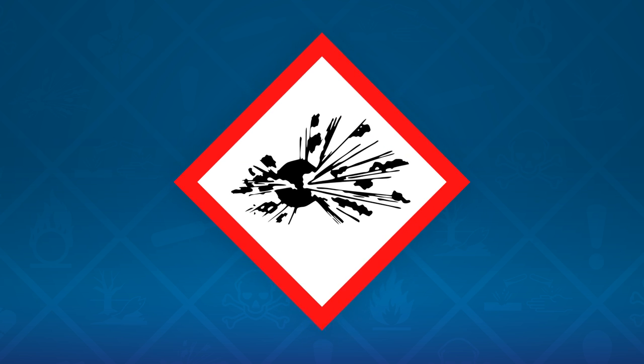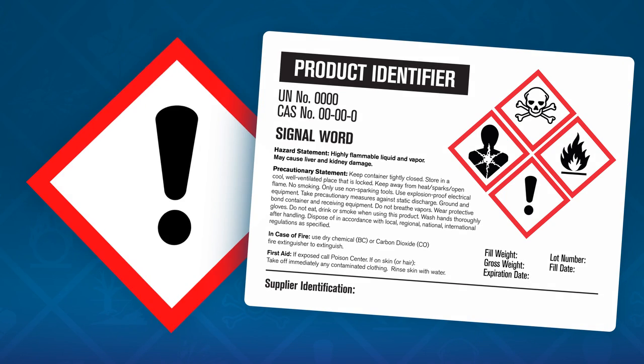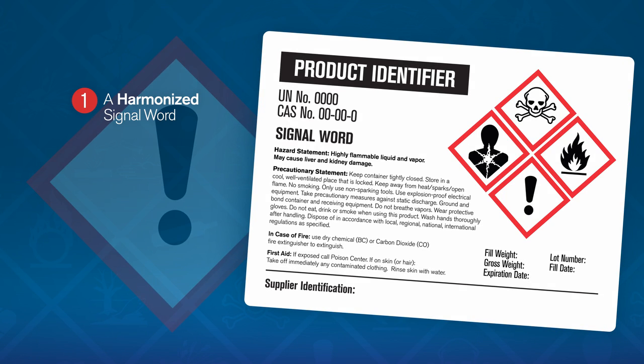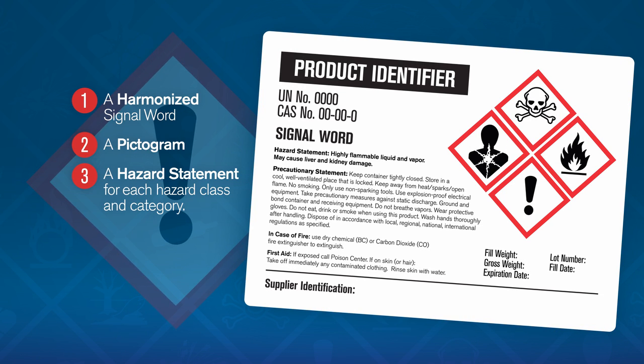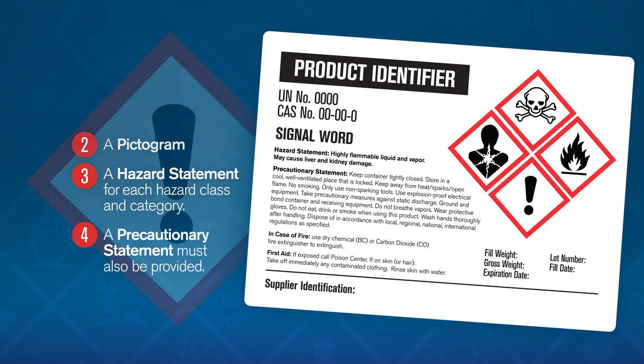Chemical manufacturers and importers will be required to provide a label that includes a harmonized signal word, a pictogram, a hazard statement for each hazard class and category, and a precautionary statement.